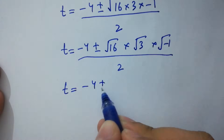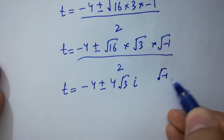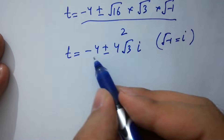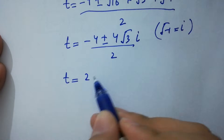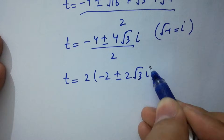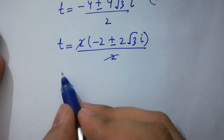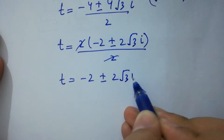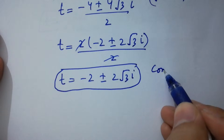Next, t equals minus 4 plus or minus square root of 16 times square root of 3 times square root of minus 1, over 2. The square root of 16 is 4, and the square root of minus 1 is i from complex numbers. So we have t equals negative 2 plus or minus 2 root 3 i, which are the complex solutions.